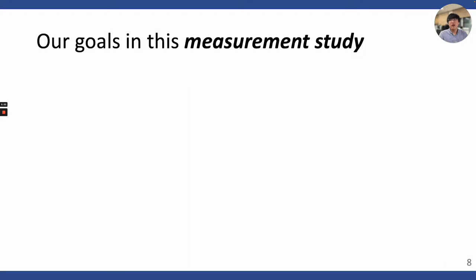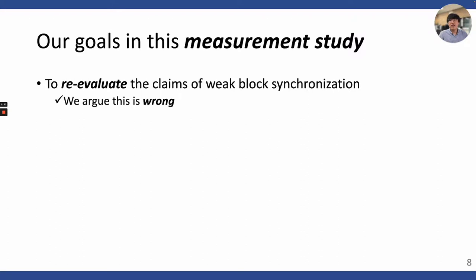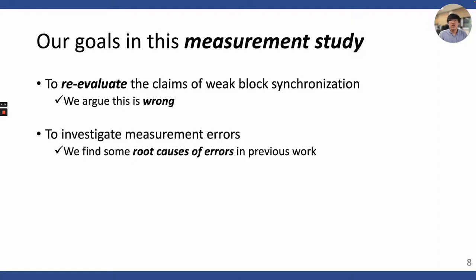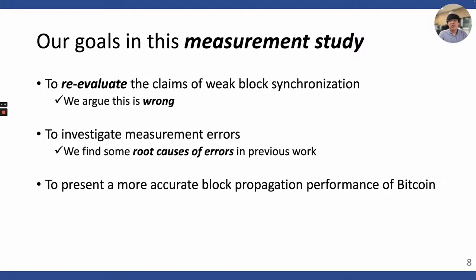Our goals in our measurement study are: first, to re-evaluate the claims of weak block synchronization — we argue this is wrong. Second, to investigate measurement errors found in previous work and find their root causes. Finally, to present more accurate block propagation performance in Bitcoin. To sum up in advance: Bitcoin is, in fact, fast enough.